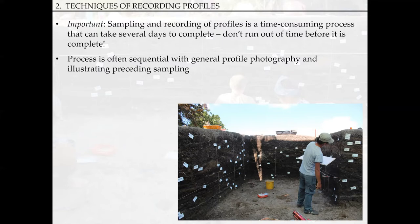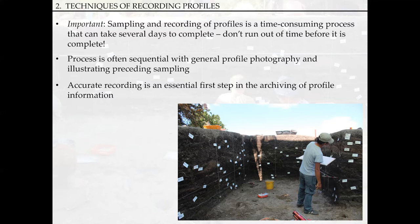The process is also often sequential: general profile photography first, then illustrating and drawing before you can take your samples out. You need your drawings and photography finished before you start taking samples out. You can't locate your samples until you've done your drawing. If you do your recording first, the person who's done the recording can stand there with a planning board and say the samples come from here, context number X, Y, and Z. Recording is a central first step in the archiving of profile information and should be an essential part of your archiving.